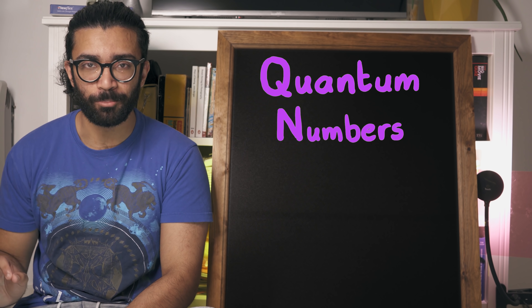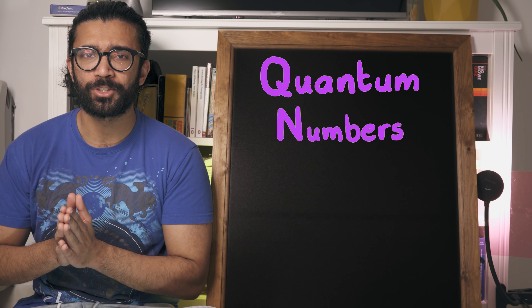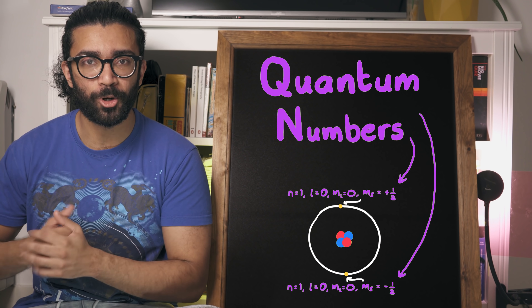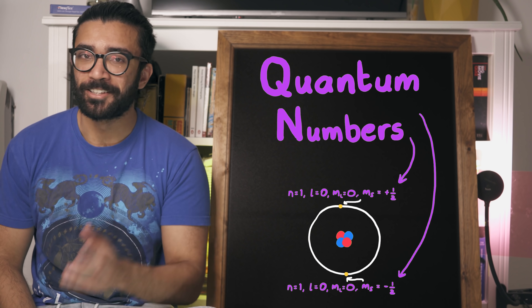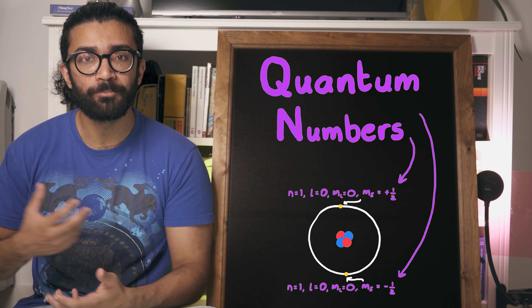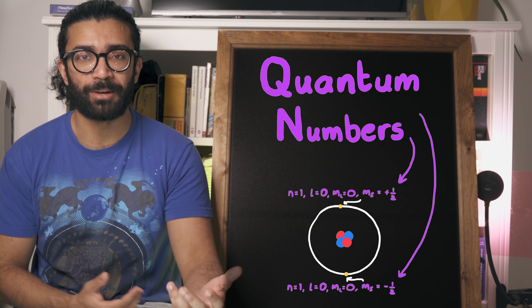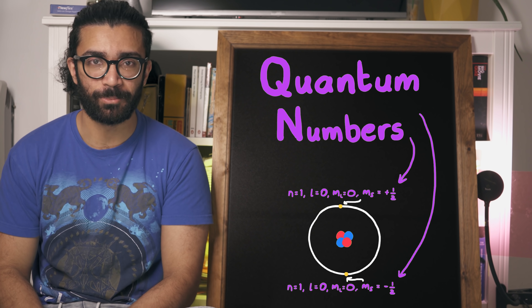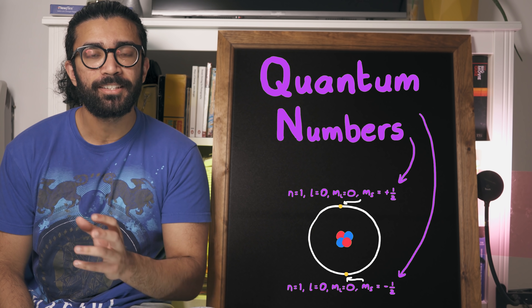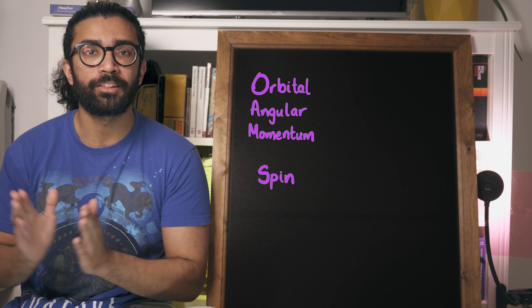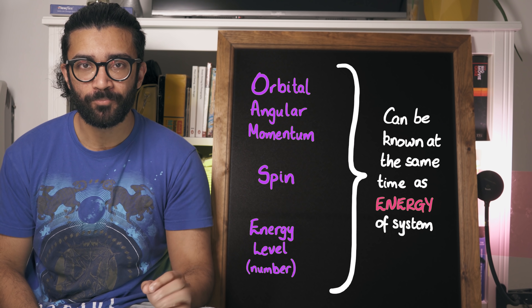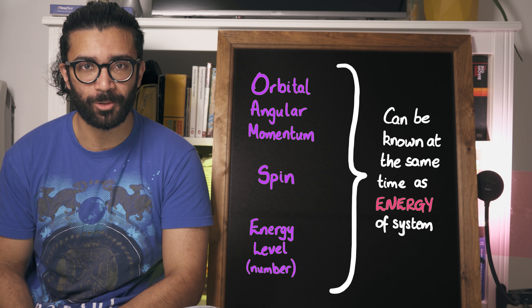Hey everyone, Parth here. In this video I want to talk about quantum numbers. These are numbers that can be used to describe parts of a quantum system that would otherwise need a lot more complicated, wordy descriptions. And the great thing is that these quantum numbers, although they seem fairly simplistic compared to the mathematics of quantum mechanics, they actually come directly from the mathematics of quantum mechanics. Quantum numbers are basically used to describe certain quantities, certain things that we are allowed to know at the same time as knowing the energy of our quantum system.